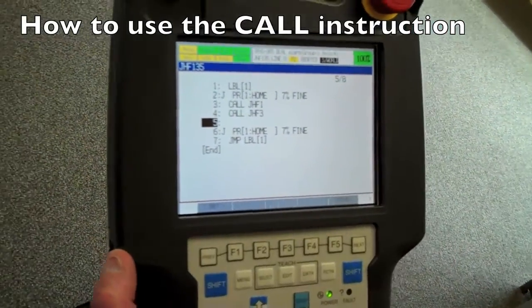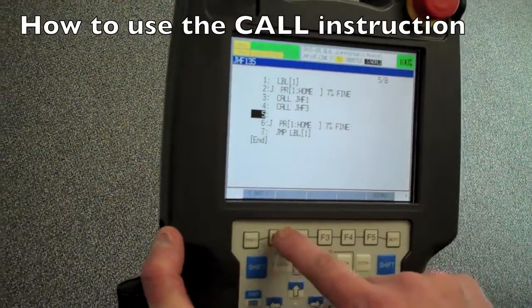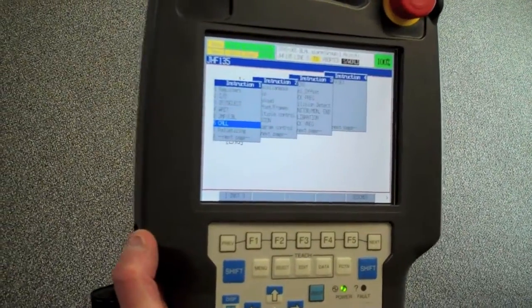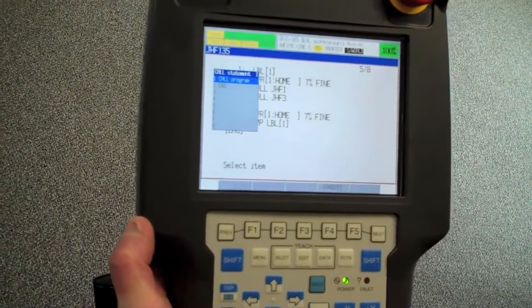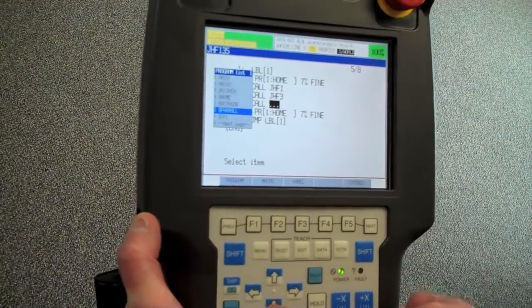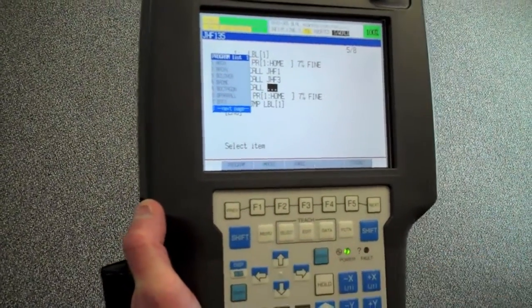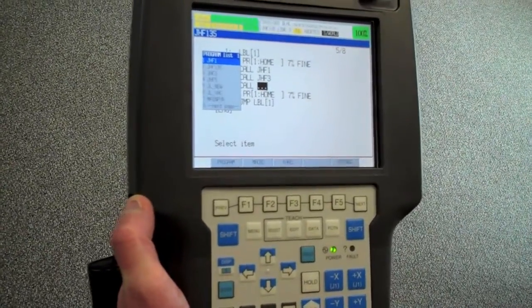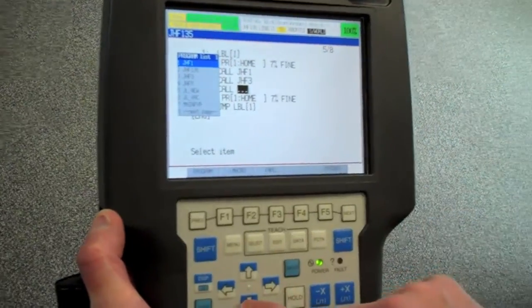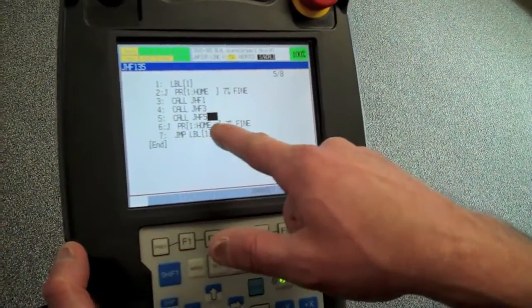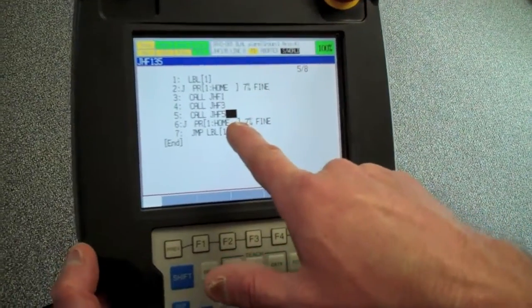So what we're going to do is we're going to hit instruction. We're going to go down to the call feature. We're going to call a program. Now we select the name of the program. So all we've got to do is scroll down. And you can even just hit number eight to go down fast. We'll hit number eight again for the next page. Now we see JHF number five. That's what we want. We're going to select that. Hit enter. Now we've got our program number five called into our master program.